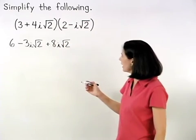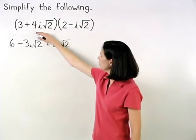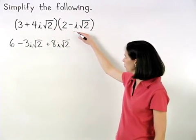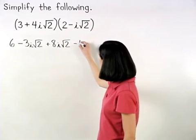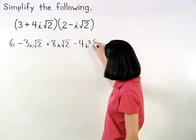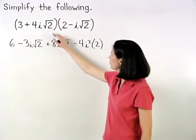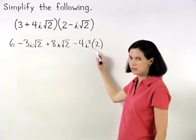And the product of the last terms, positive 4i root 2 times negative i root 2, is negative 4i squared times 2. Notice that root 2 times root 2 is 2.